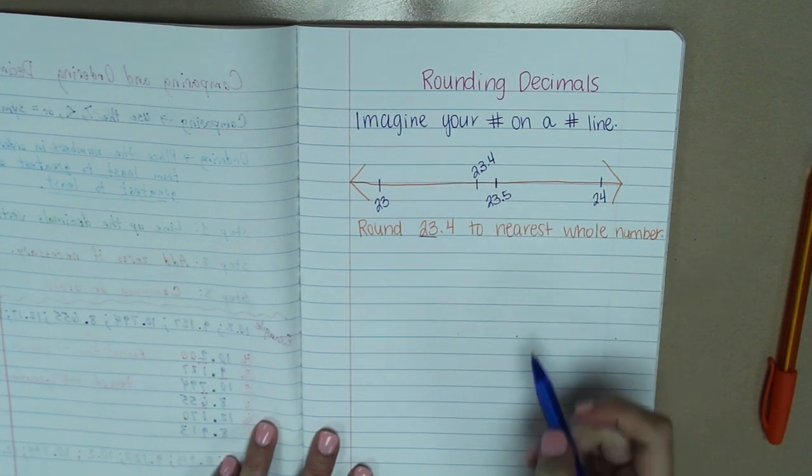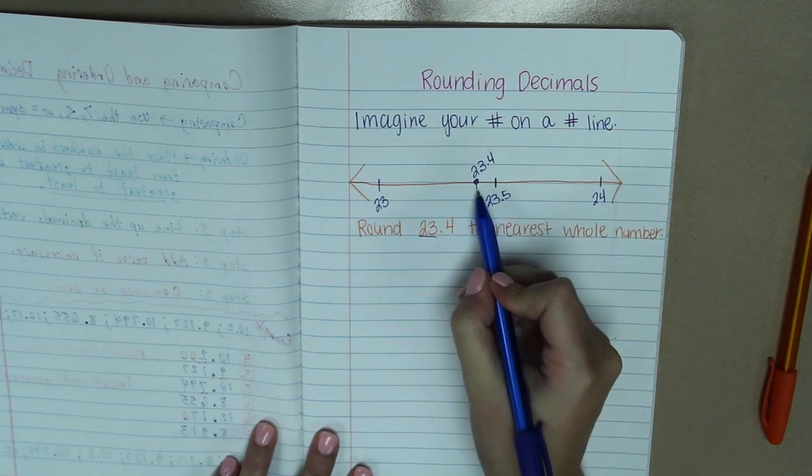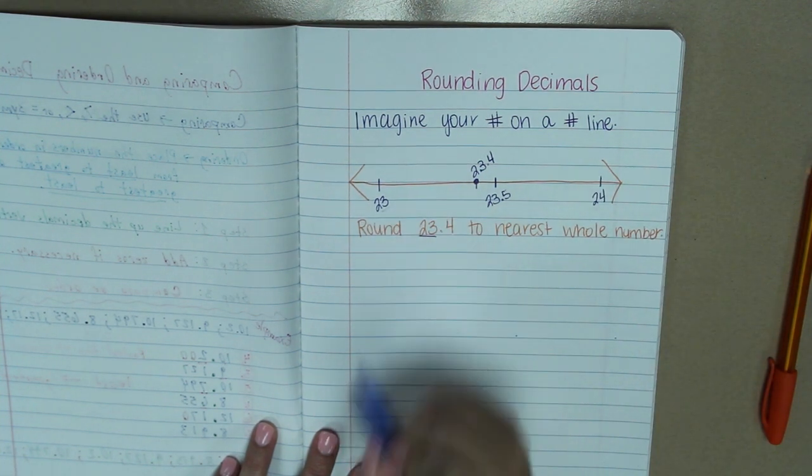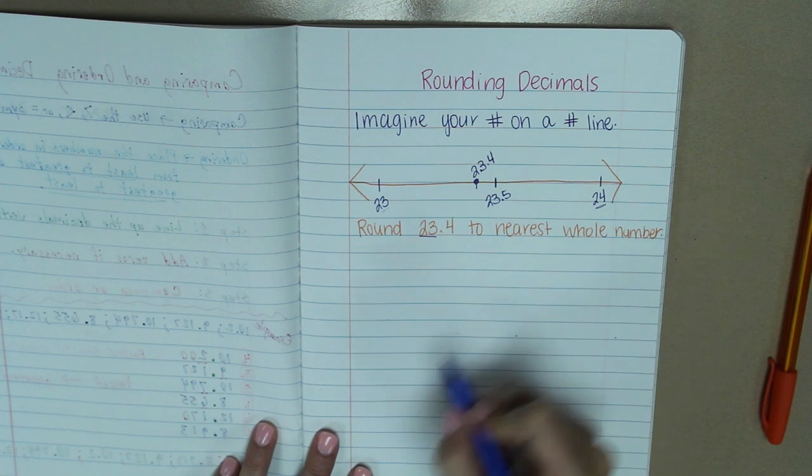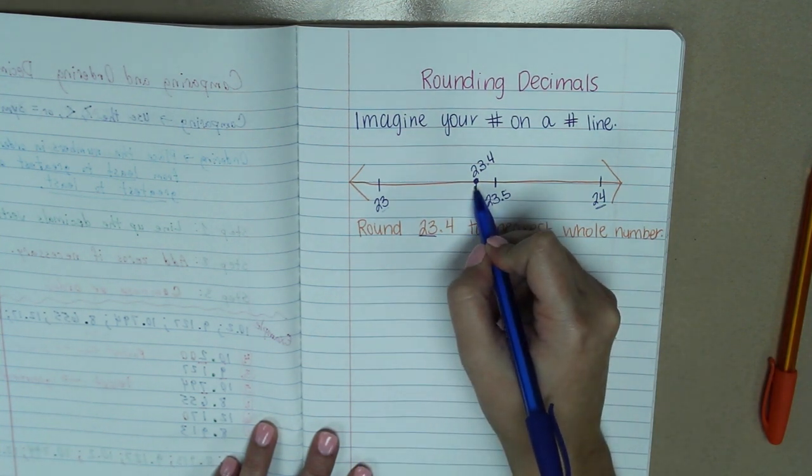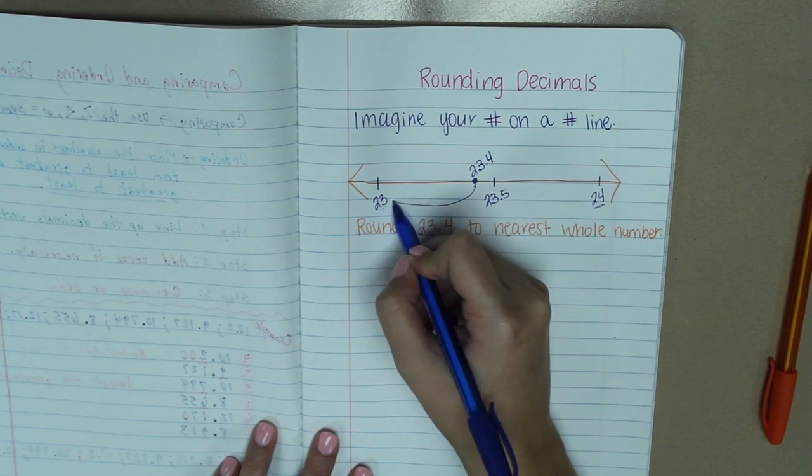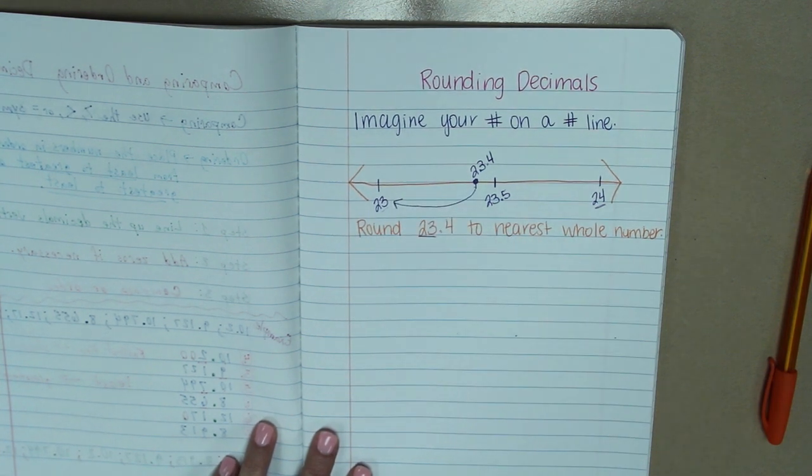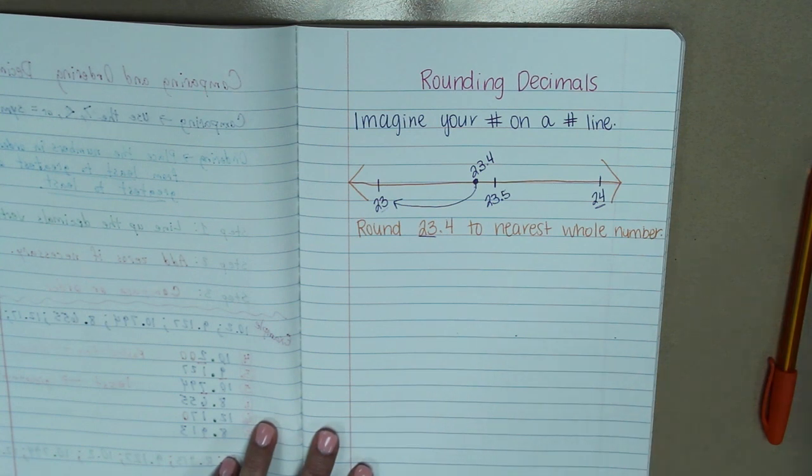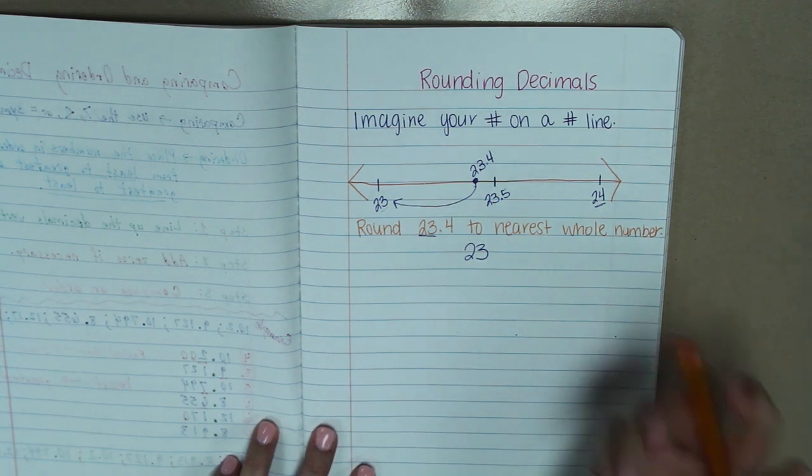Okay, so if our number is located right here on our number line, we're asking ourselves is it closer to 23 or is it closer to 24? And in this case, we can see that it is on the left side of the middle, so it's going to be closer to 23. So our answer here is 23.